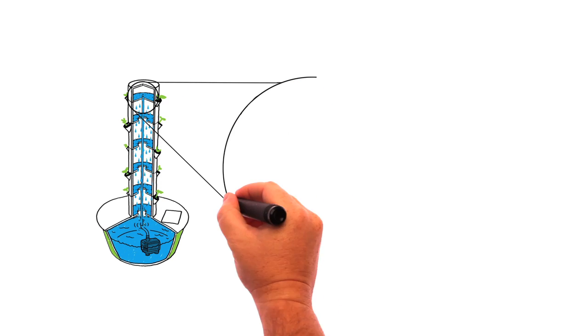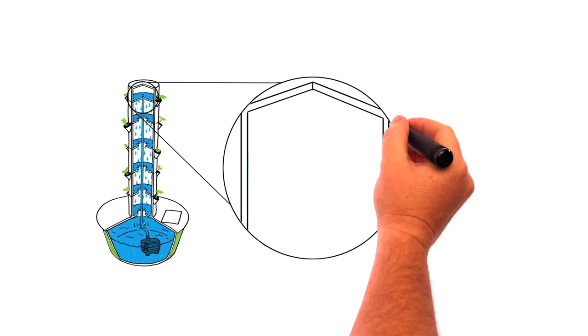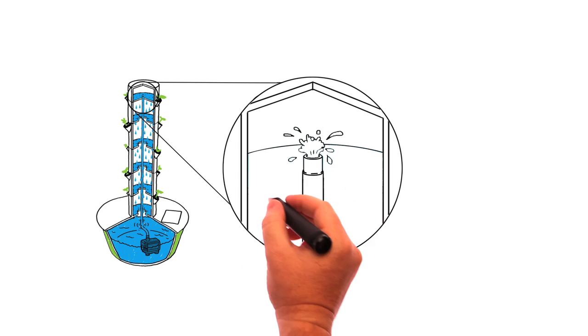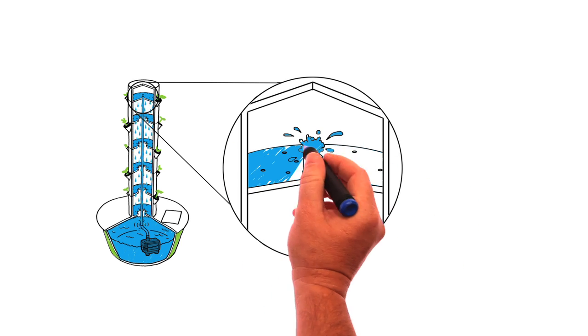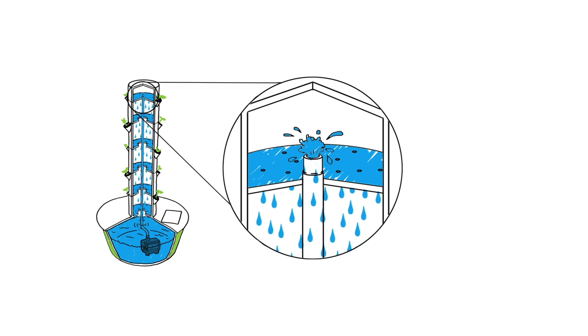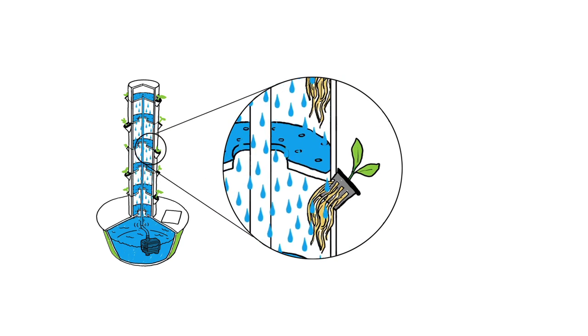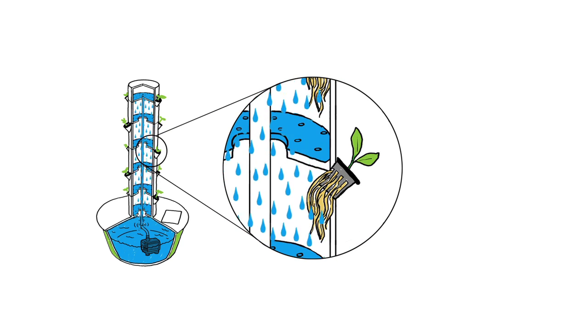On the journey down the tower, the nutrient solution feeds the roots and becomes highly oxygenated as it cascades gently down the reservoir. This process is continuous, providing fresh oxygen, water, and nutrients to the roots of the plants.